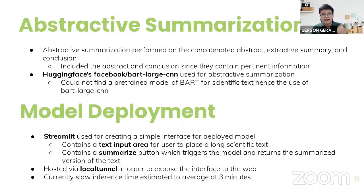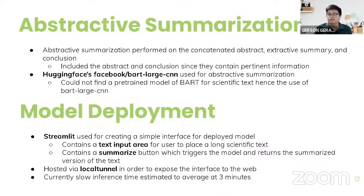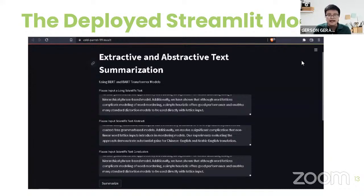For abstractive summarization, I used Hugging Face's BART-large-CNN model, which was trained on news articles. I couldn't find a pre-trained BART model like SciBERT trained on scientific text, so I used the best model I could find. The Streamlit app contains a text input area for the text, abstract, and conclusion, plus a 'Summarize' button which when triggered performs model inference and returns the summarized version. I tried running it locally but my device was very slow, so I hosted it via Google Colab's GPU using a local tunnel.